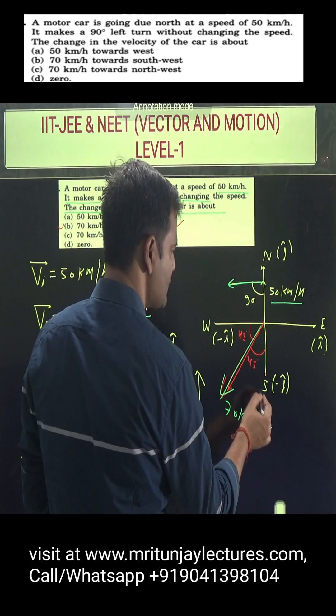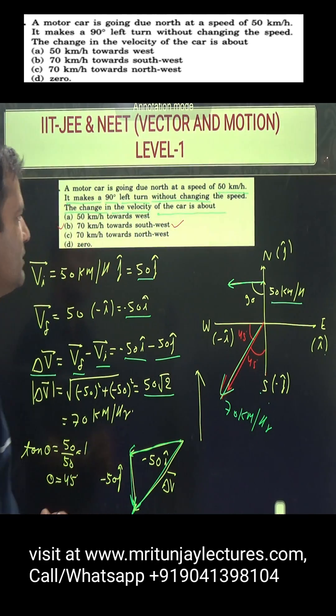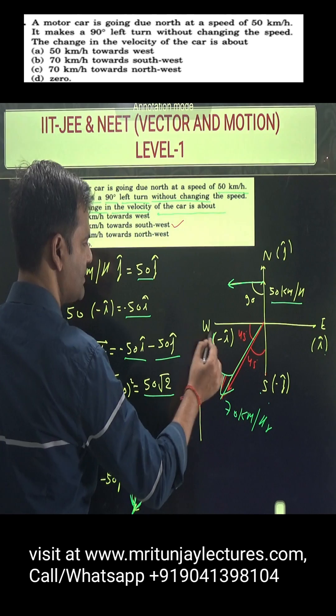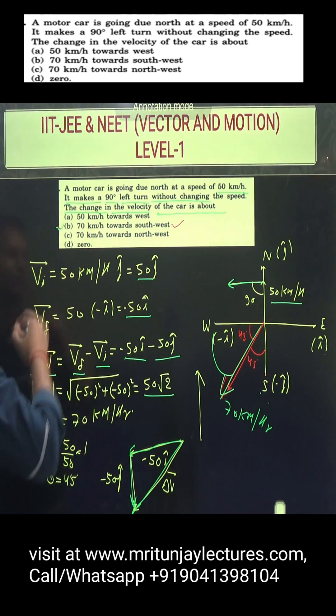70 kilometer per hour south of west. So B is the correct option.